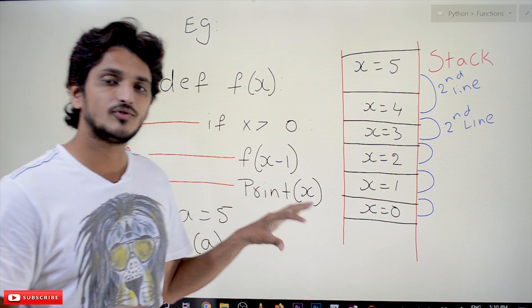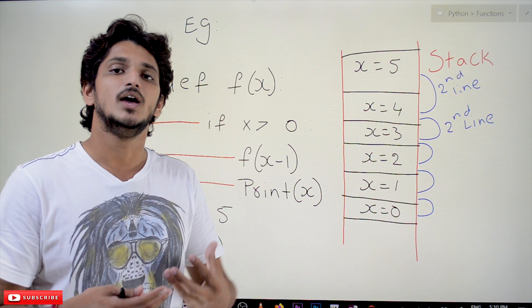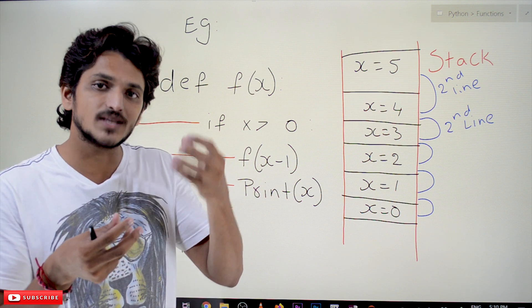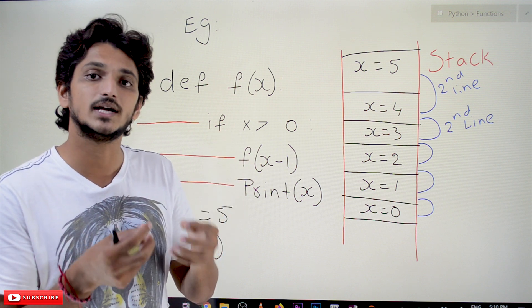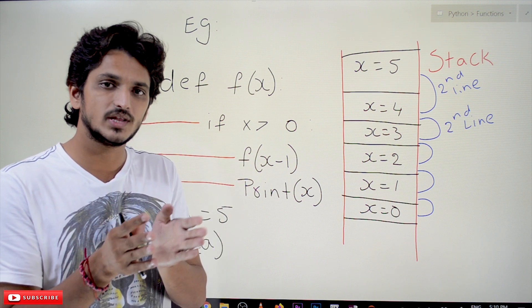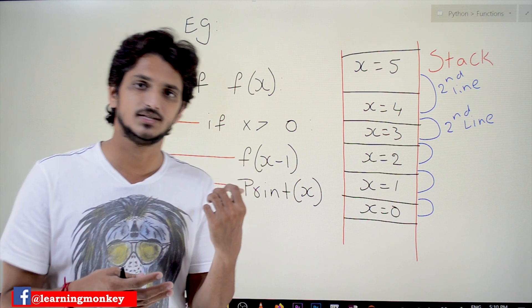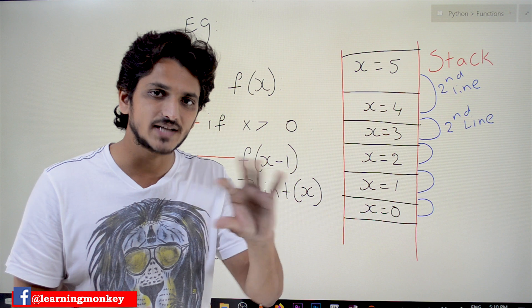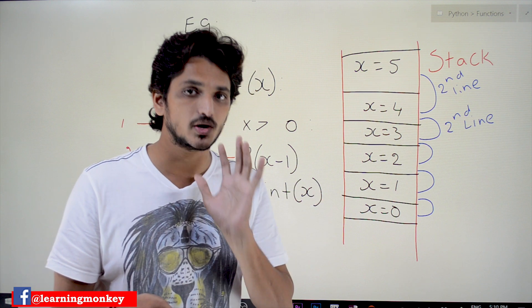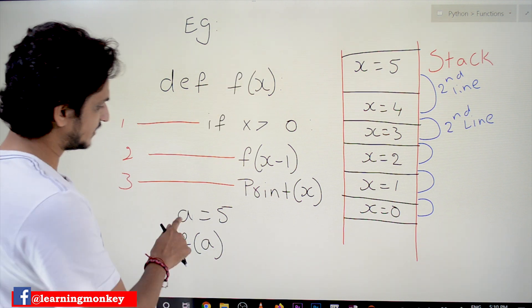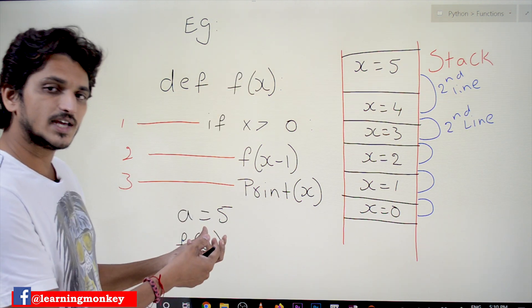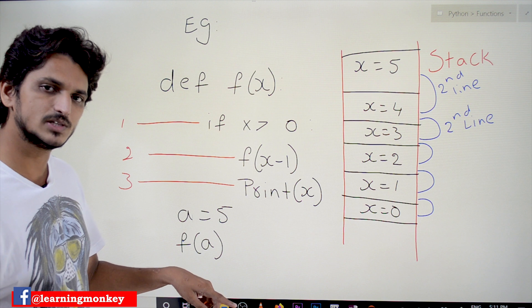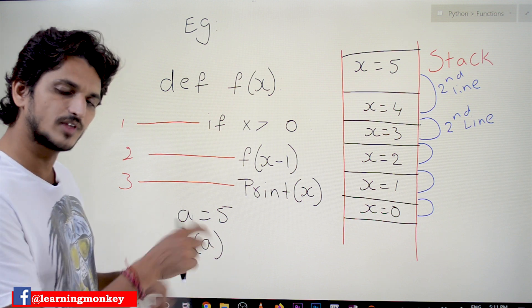For understanding how recursive functions execute, we have to understand from our last class: whenever a function is called, it will assign some space in the stack to save its local variables. That point is very important to understand. Another key point is that after completion of the function, the space assigned to that function will be removed from the stack space. The program starts execution at a equal to 5. 5 is an integer object assigned in the heap space, and the reference is maintained in the global variable space.